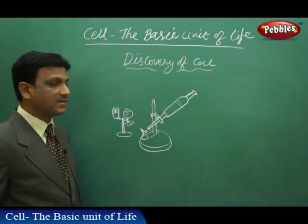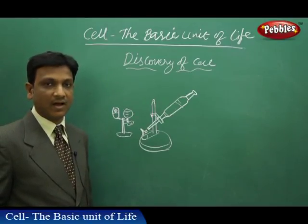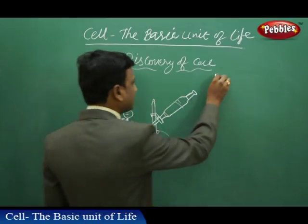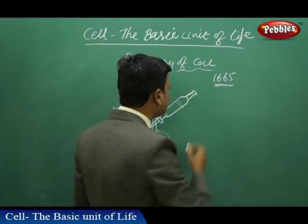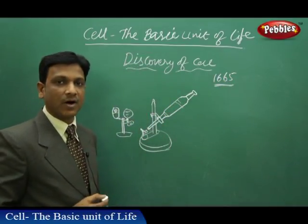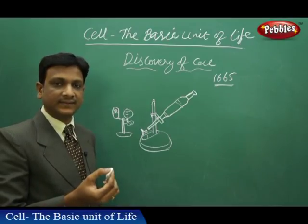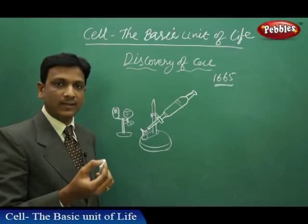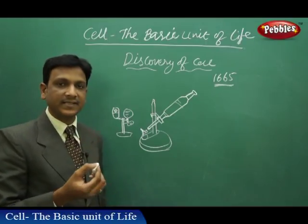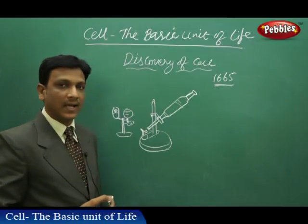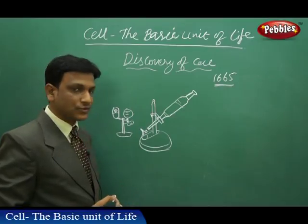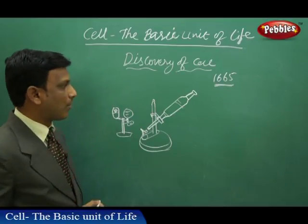The discovery of the cell was done by Robert Hooke in the year 1665. Robert Hooke observed cork cells — cork being the dead stem of an oak plant. He collected the cork, made a thin slice of it, and observed it under his handmade microscope, which he himself prepared.